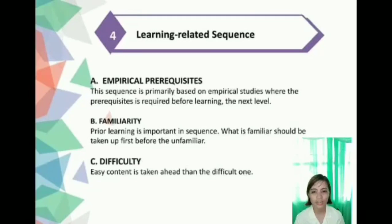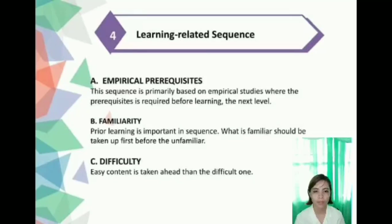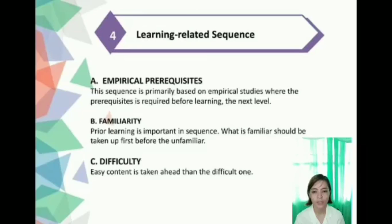The last major principle is learning-related sequence, which is based on the psychology of learning and how people learn. The first subtype is empirical prerequisite: sequence is primarily based on empirical studies where a prerequisite skill is required before learning the next. For example, teach skills in discriminating initial consonants before teaching word attack, or in softball, teach catching and throwing before batting. The next subtype is familiarity — what is familiar should be taken up first before the unfamiliar. For example, in teaching currencies, teach the peso before the dollar. The last subtype is difficulty — easy content is taken up before the difficult. For example, teach rhymes before blank verse.